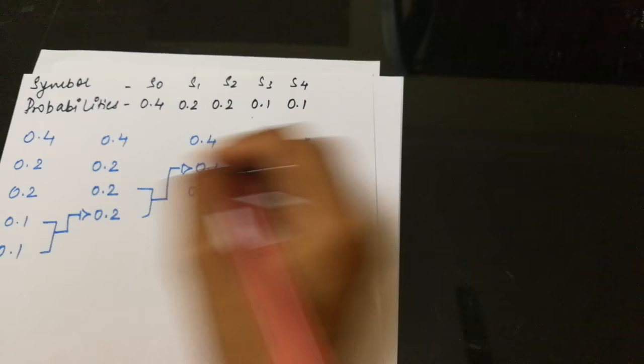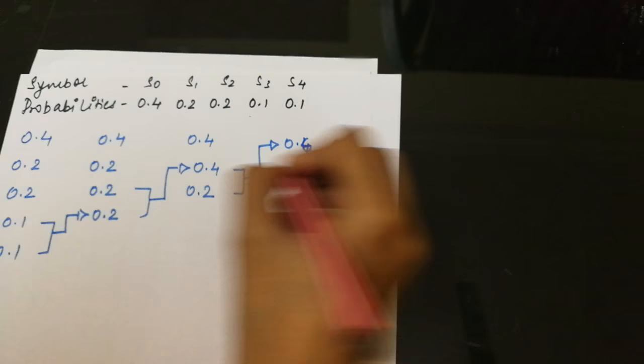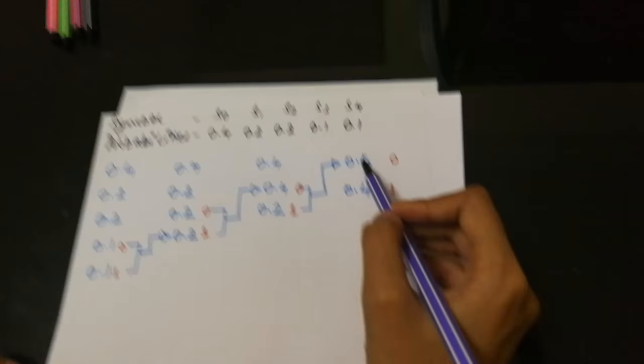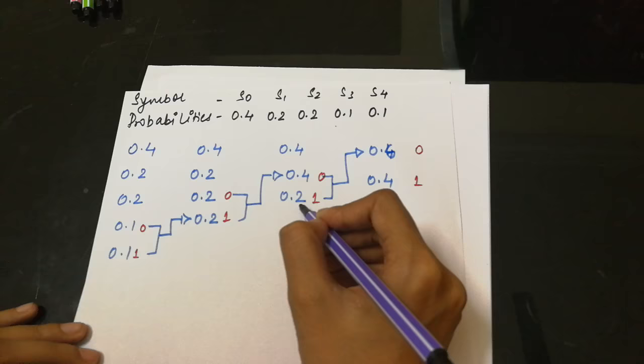This one will be listed in front of 0.4. Now 0.4 is a result of 0.2 and 0.2. In 0.4, in front of 0.4 we have these two, so these two would be written down here.